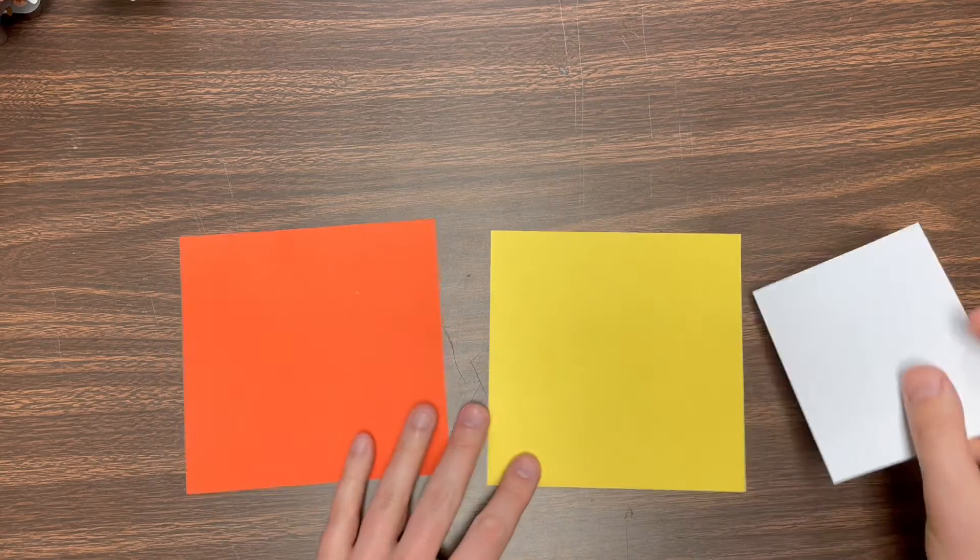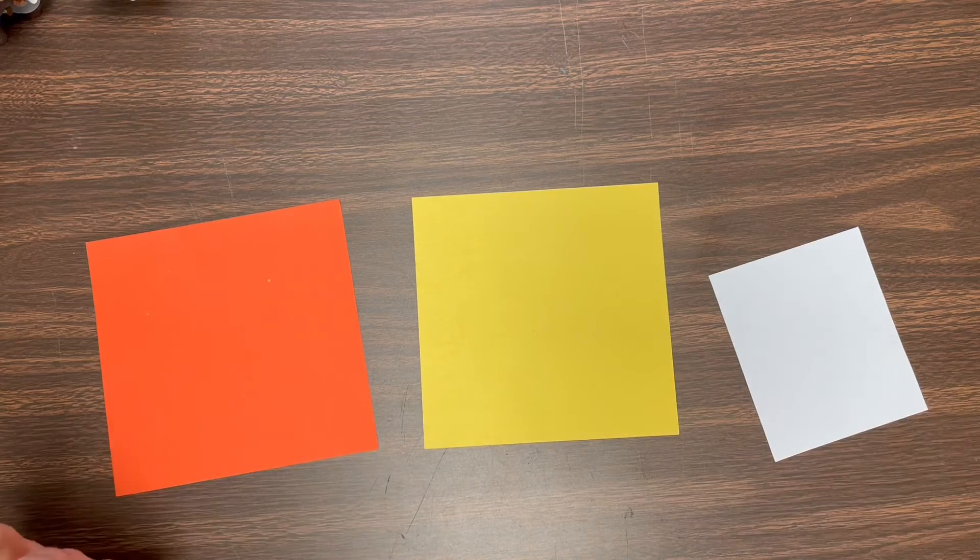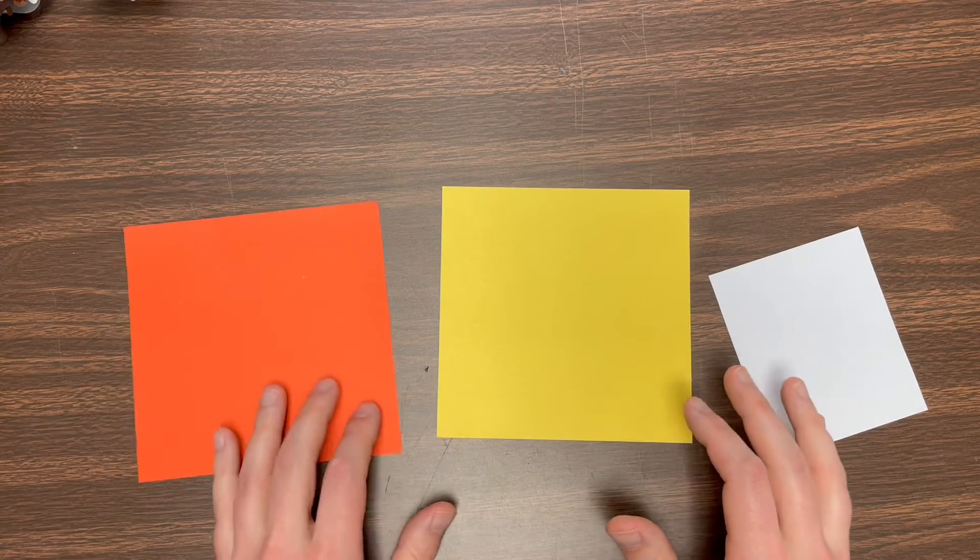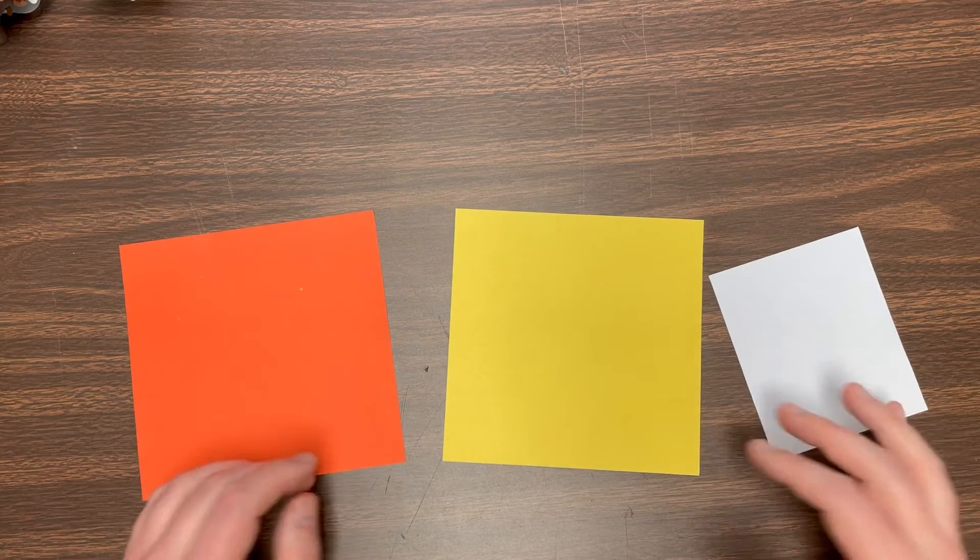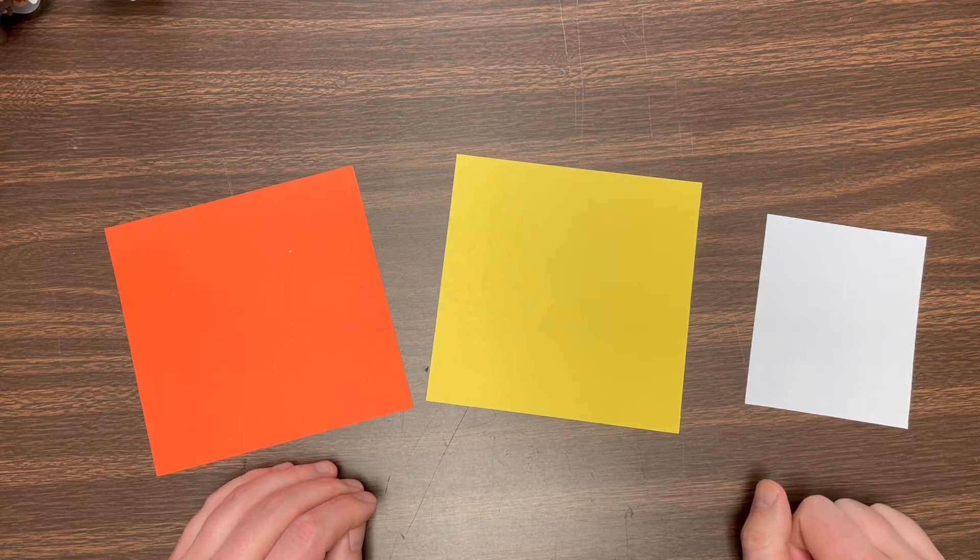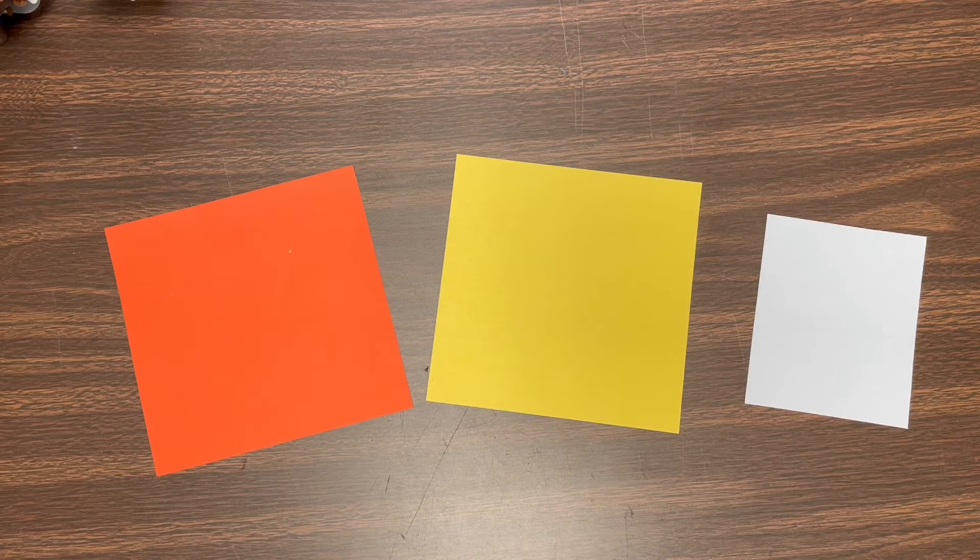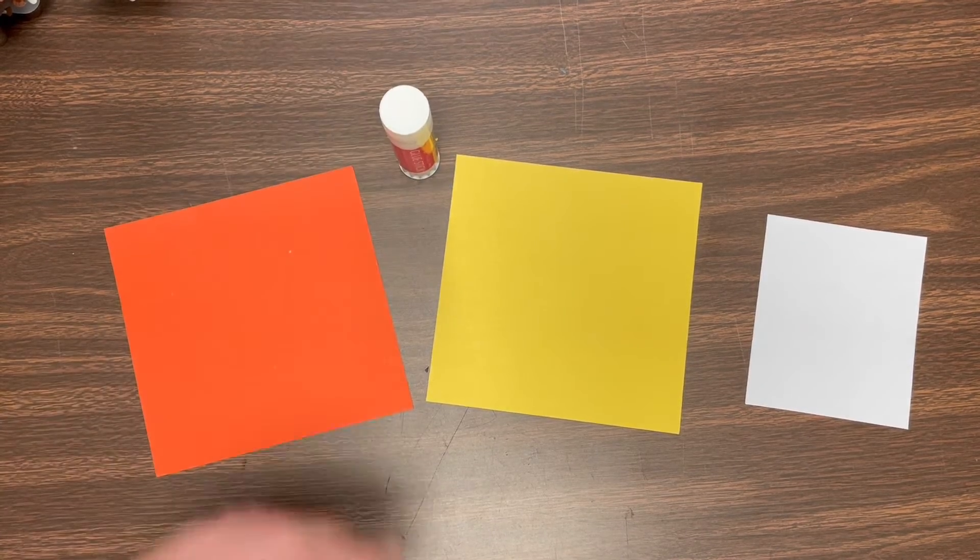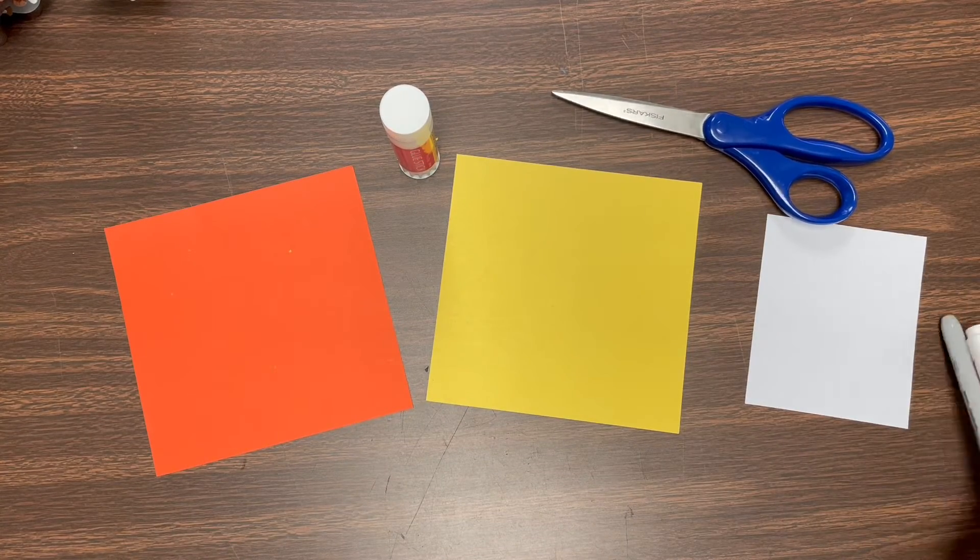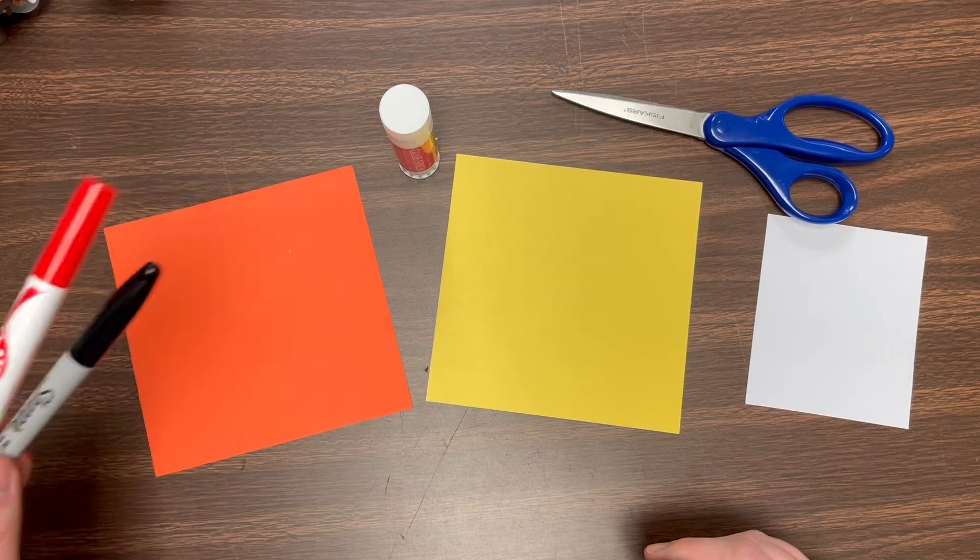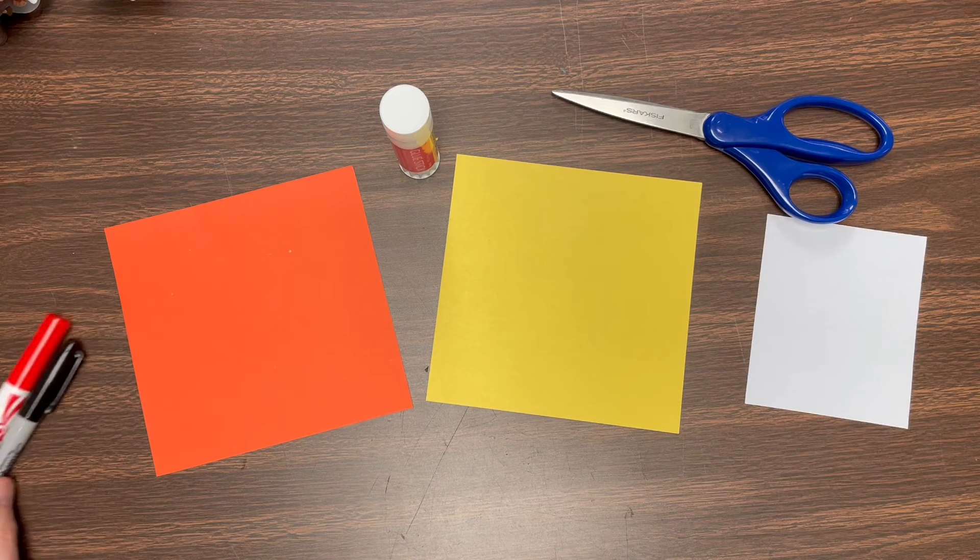So you're going to need some paper. You're going to use whatever color chicken you want. They're usually yellow. Sometimes they're orange. Sometimes they're white. You can do a fantasy chicken if you like. You're also going to need a little white for the eyes, a glue stick, scissors, and two things to color with, a black and a red. Could be marker, crayon, color pencil. All of those will work just fine.